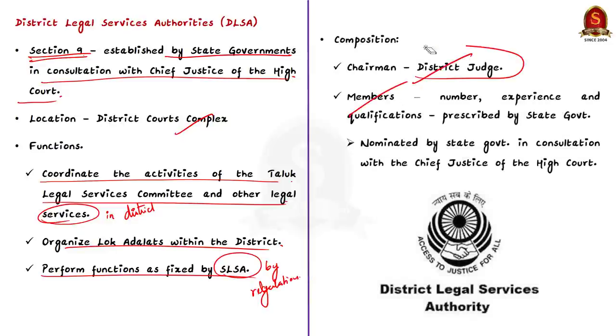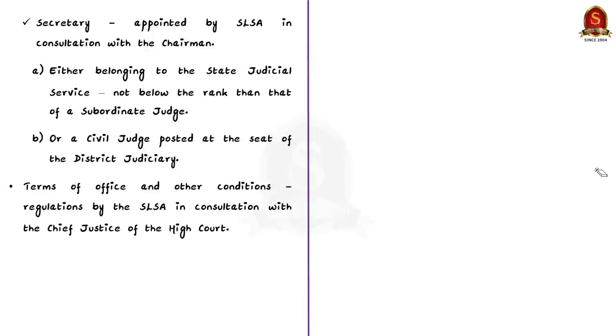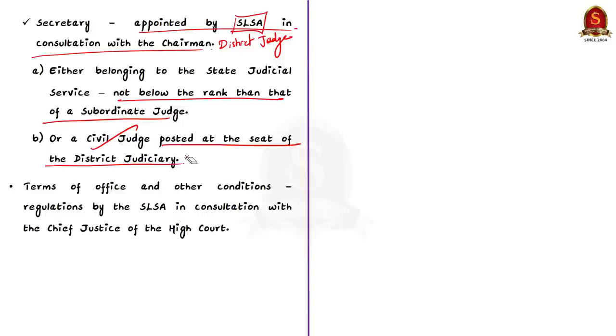Chairman is the district judge. But the number of members, their experience and qualifications are all prescribed by the state government. The members will be nominated by the government in consultation with Chief Justice of High Court. Next coming to the secretary, the secretary of DLSA is appointed by state government in consultation with the chief justice of high court. The other qualification is the person should be a civil judge posted at the seat of district judiciary. The terms of office and other conditions of members and secretary is determined by regulations made by state Legal Services Authority in consultation with chief justice of high court. That's all about this news article discussion.